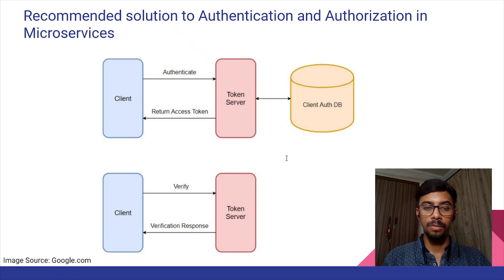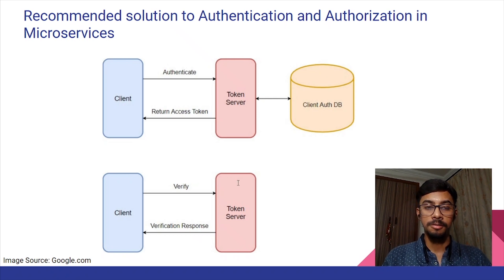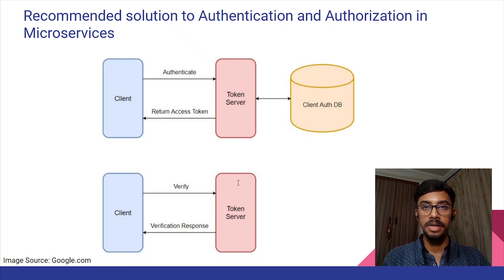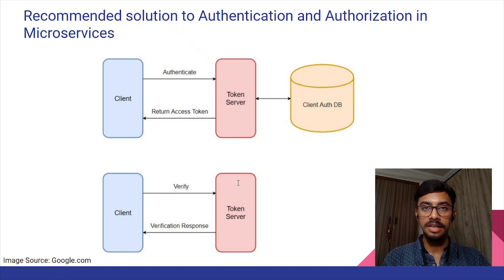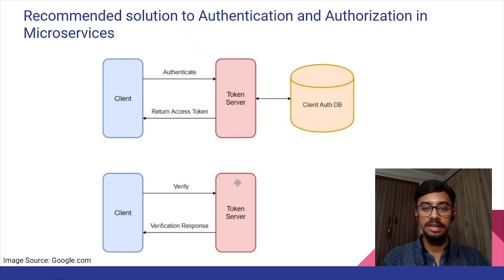So what could be the recommended solution to authentication and authorization in microservices? For microservices to work, there needs to be a way for client applications to authenticate with the API. There are many methods for authenticating APIs, but the best possible method could be to use JWT, or JSON Web Tokens. With JWT there is a common framework for creating access tokens that store a small data payload. Using a framework or programming language, we can create a simple access token microservice that can be used by other microservices as an authentication platform.